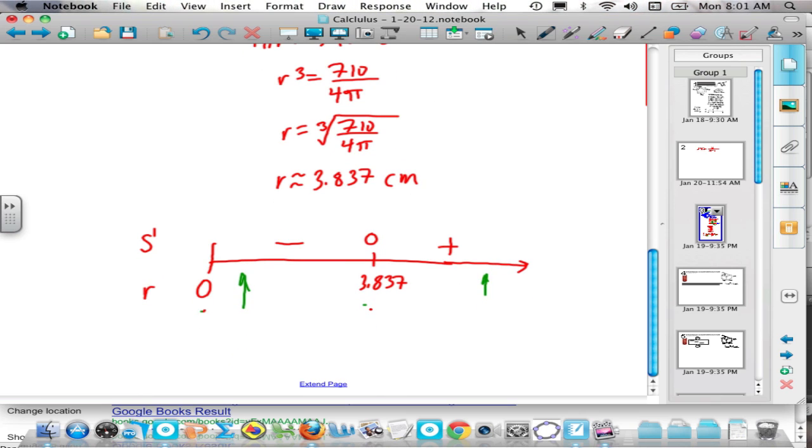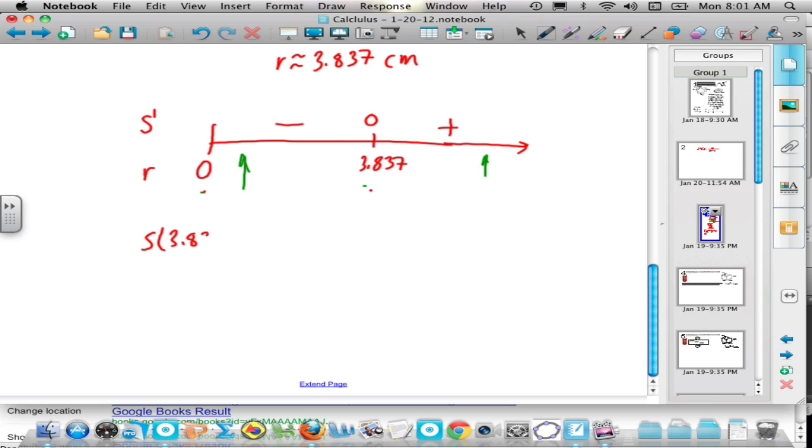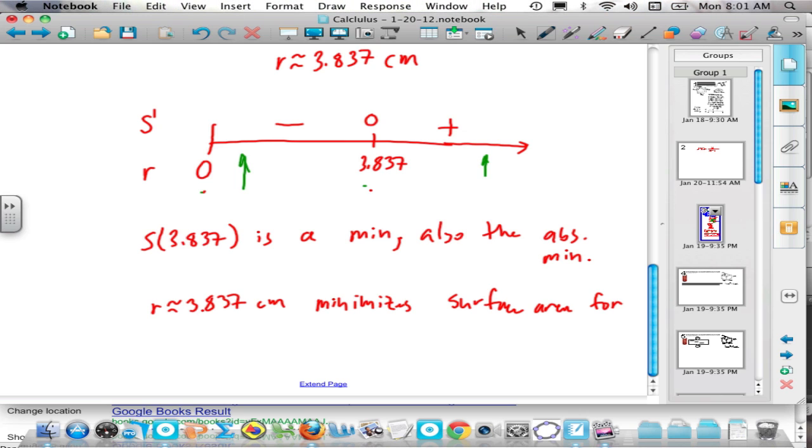So since S prime changes from negative to positive at 3.87 for r, that means that S of 3.837 is a min. All right, and it's the only min. So it's also the absolute. So we've just proved that can manufacturers should really make the radius of about 3.837 centimeters. So that minimizes surface area for a can of 355 milliliters.